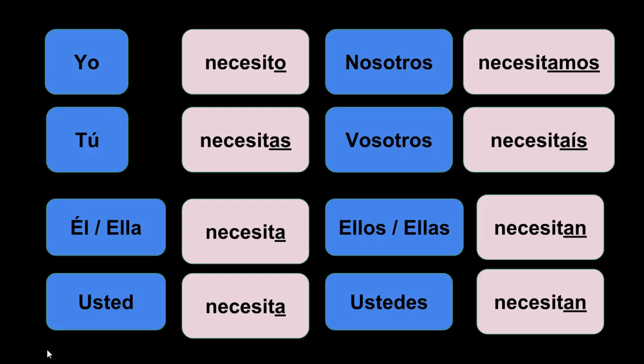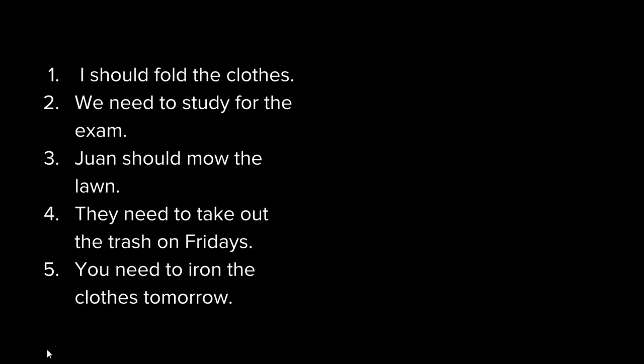Por ejemplo — for example — yo necesito practicar mi vocabulario de español. I need to practice my Spanish vocabulary. On page 4, you have 8 sentences that you need to translate into español about what you should do and what you need to do. You're going to see a lot of these on your quizzes on Connect, so it's really beneficial to follow along. Number one: I should fold the clothes — Yo debo doblar la ropa.